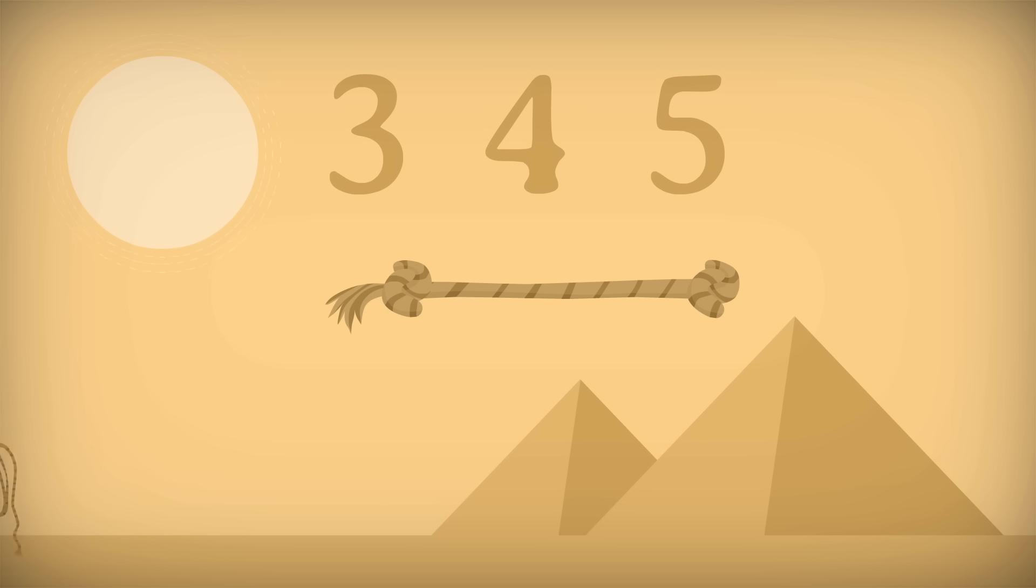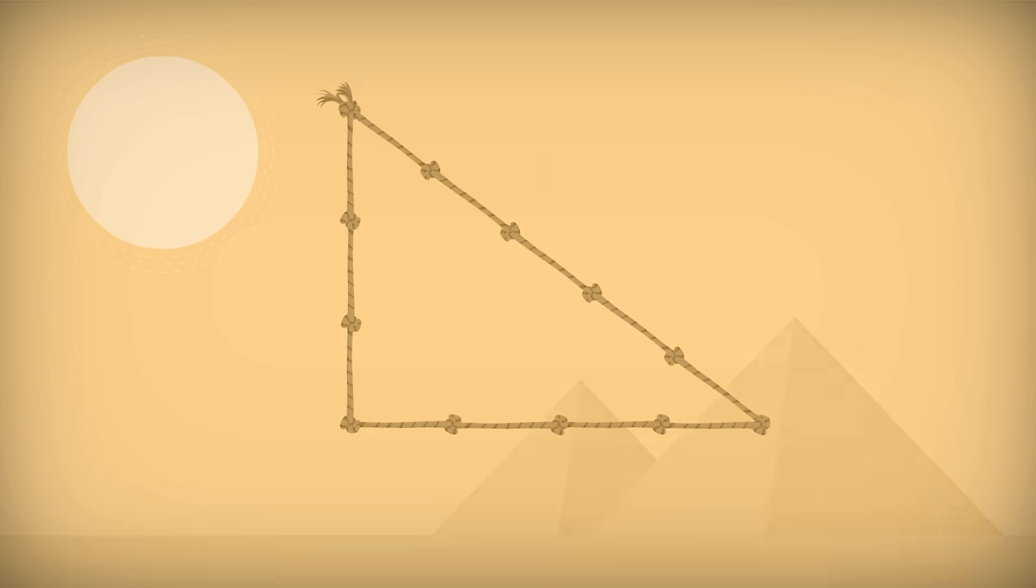The theory is that surveyors could stretch a knotted rope with twelve equal segments to form a triangle with sides of length three, four, and five. According to the converse of the Pythagorean theorem, that has to make a right triangle, and therefore a square corner.